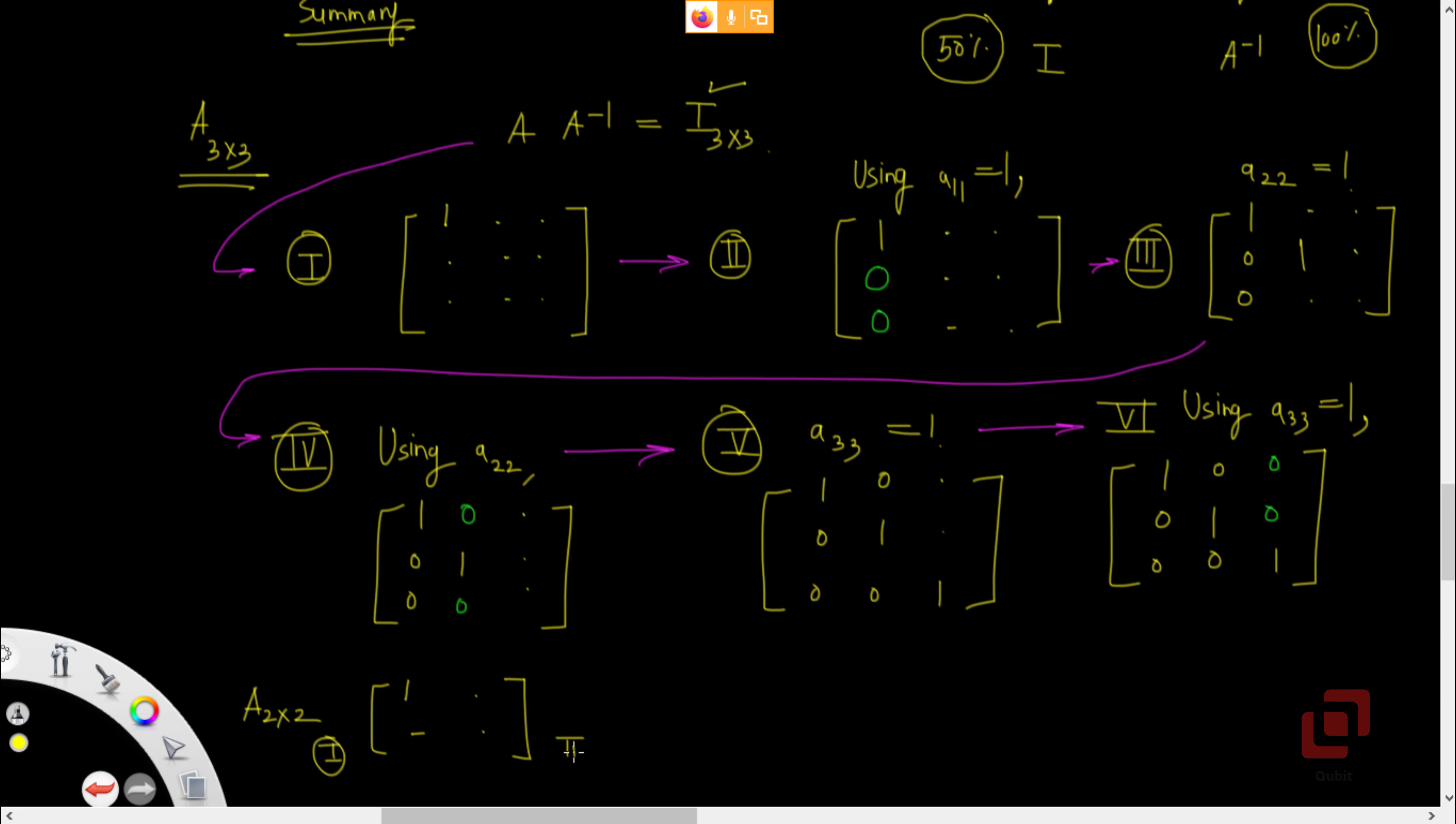In second step, what do we do? Using this one, we make everything else in the first column as 0. So, using A11, we make the second entry in the first column 0. The rest are the same.